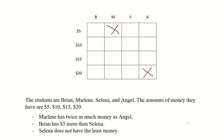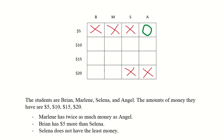The next clue says Brian has five dollars more than Selena. So that means Brian doesn't have the least and Selena doesn't have the most. And Clue 3 says Selena does not have the least money — so Selena doesn't have five dollars either. Now there's only one spot left for five dollars, so it has to be Angel. So I put a green circle there.